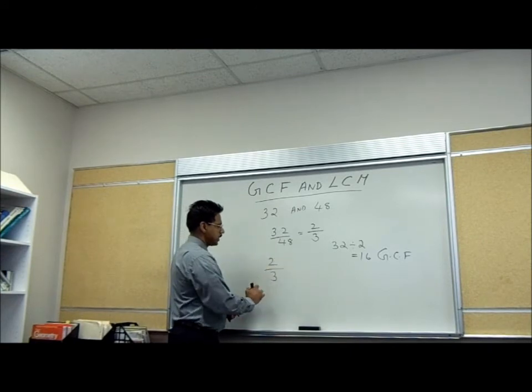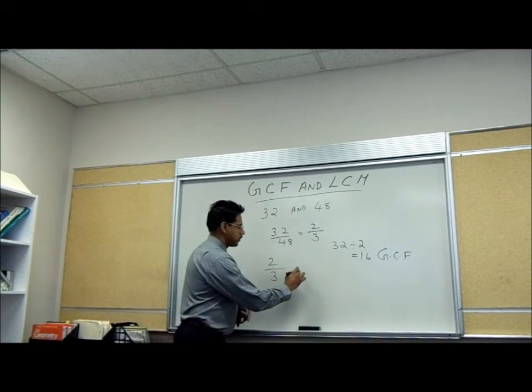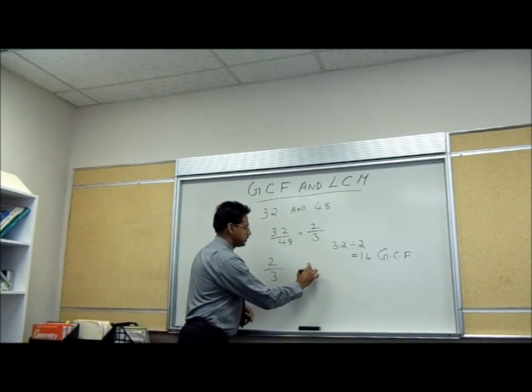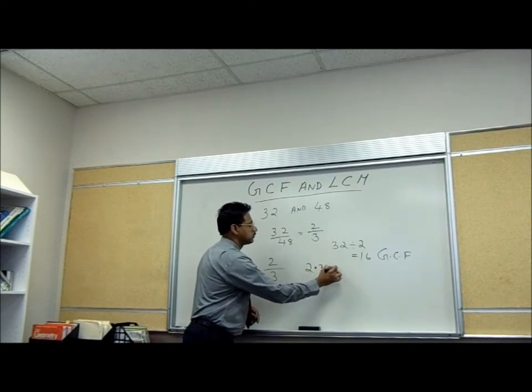2 is the numerator and 3 is the denominator. Find the product, 2 times 3 gives 6.